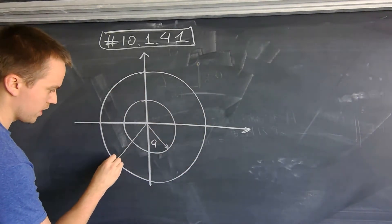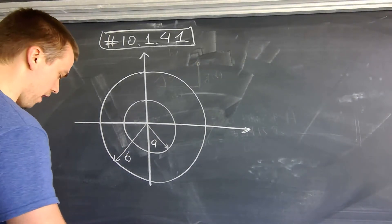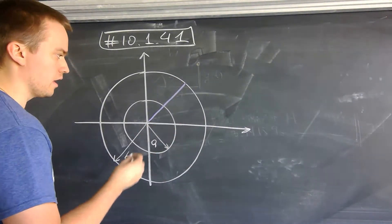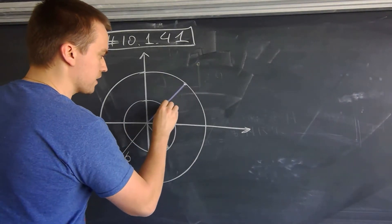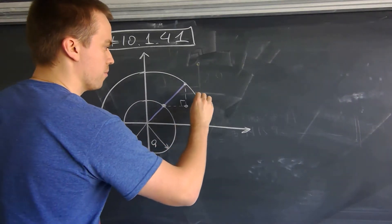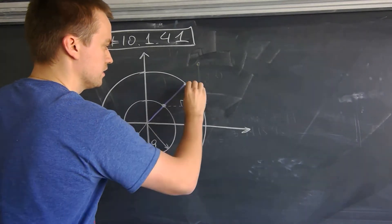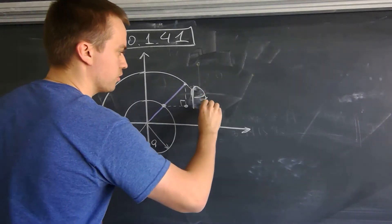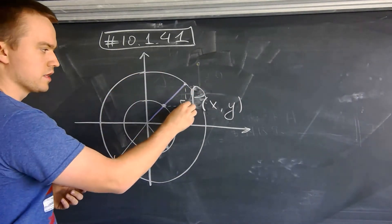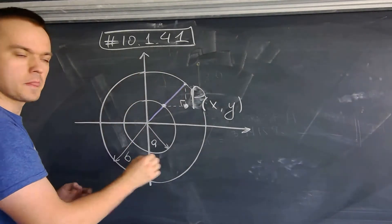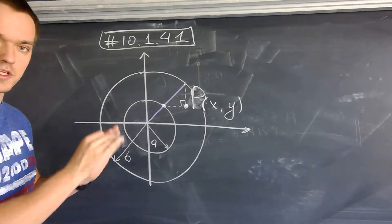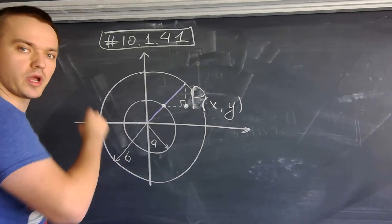We have a line segment between these two circles, and on that line segment I want to draw a point P. I'll take two perpendiculars to locate point P with coordinates x and y. When I take this line segment and move it around the circle, point P will describe some closed curve, and my goal is to find the equation of this curve.